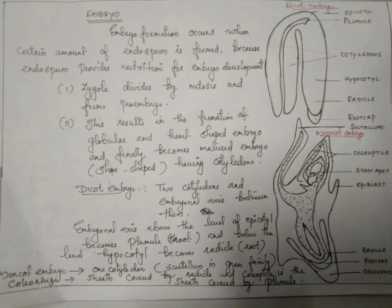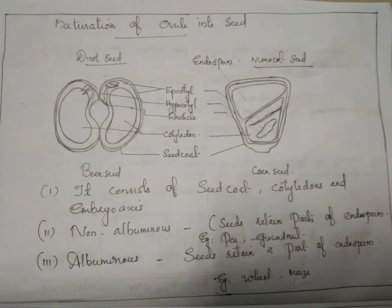Embryo formation involves the formation of epicotyl, hypocotyl, and pro-embryo stages. Next is the maturation of ovule into seed. The seed, or fertilized ovule, is the final product of sexual reproduction, consisting of seed coat, cotyledon, and embryo axis.